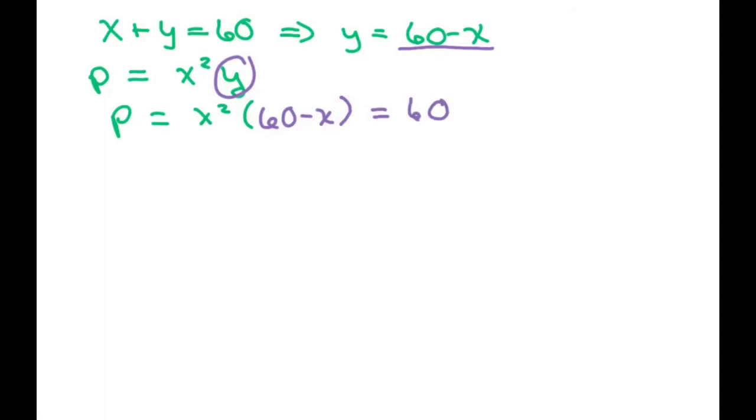If you distribute this, you're going to get 60X squared minus X cubed. We're going to take the derivative of our product with respect to X and set it to zero. So you take the derivative, you get 120X minus 3X squared, and set this to zero and solve.